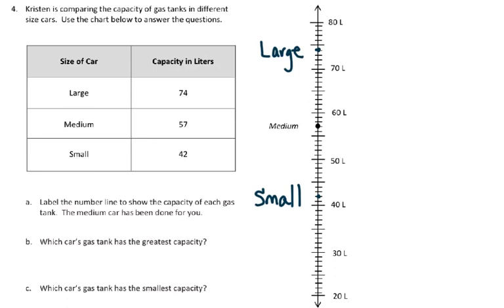B says, which car's gas tank has the greatest capacity? So the greatest capacity would be the one that's the higher, so the highest one, and it would be the large. So the large car.